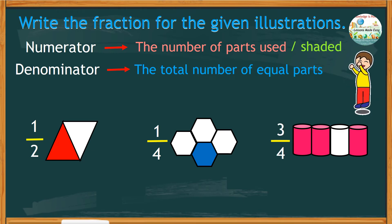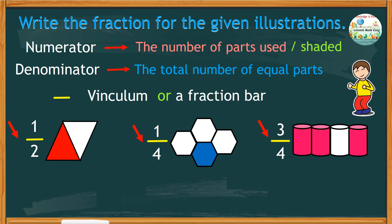But what do you call the line between these two numbers? Does it even mean something? This line is called a vinculum or a fraction bar. In a fraction, the bar means division.